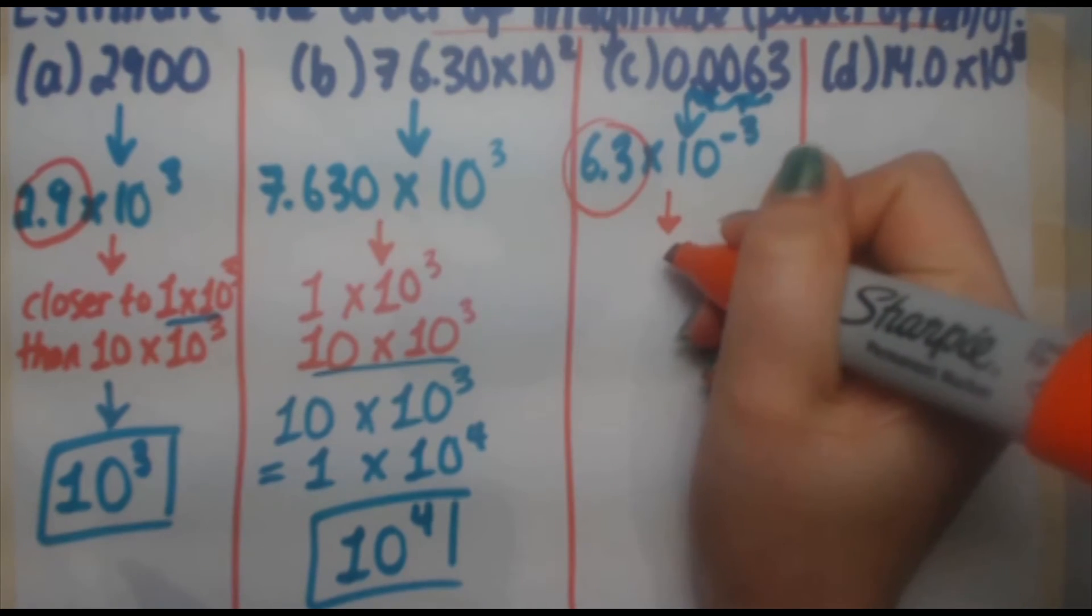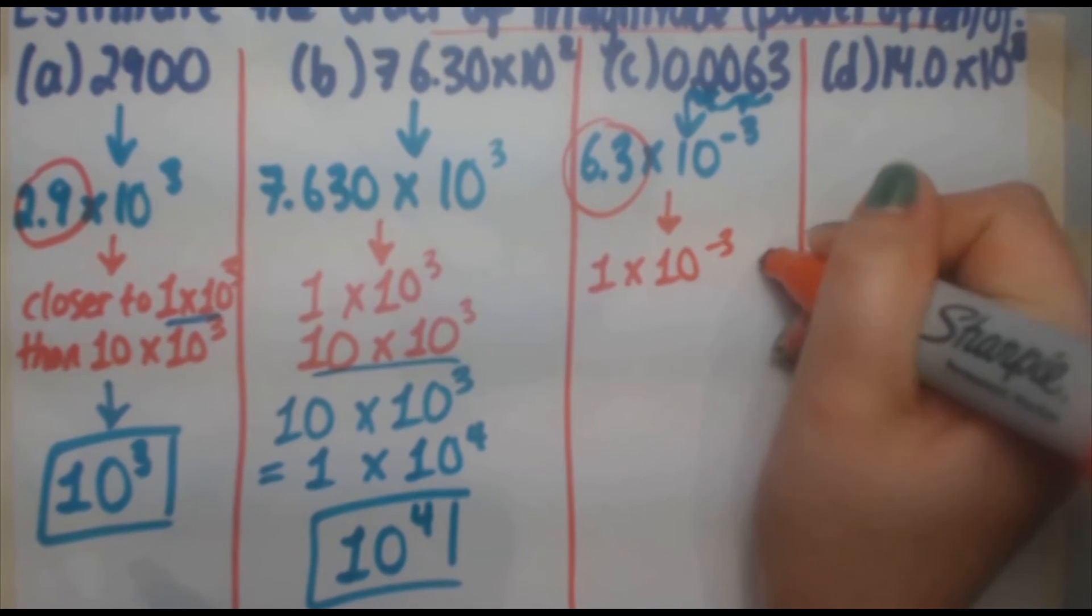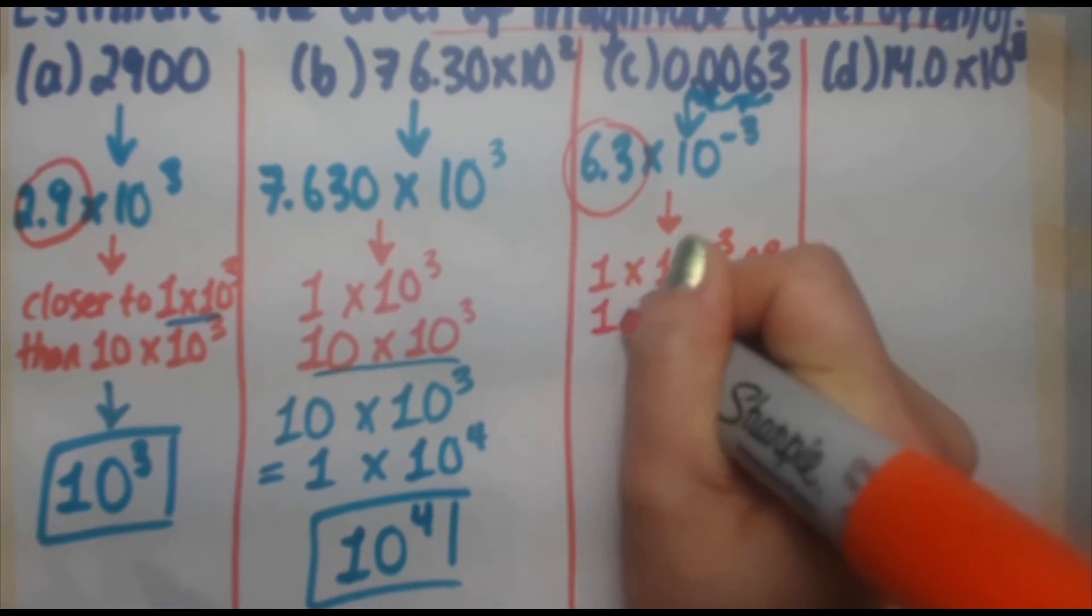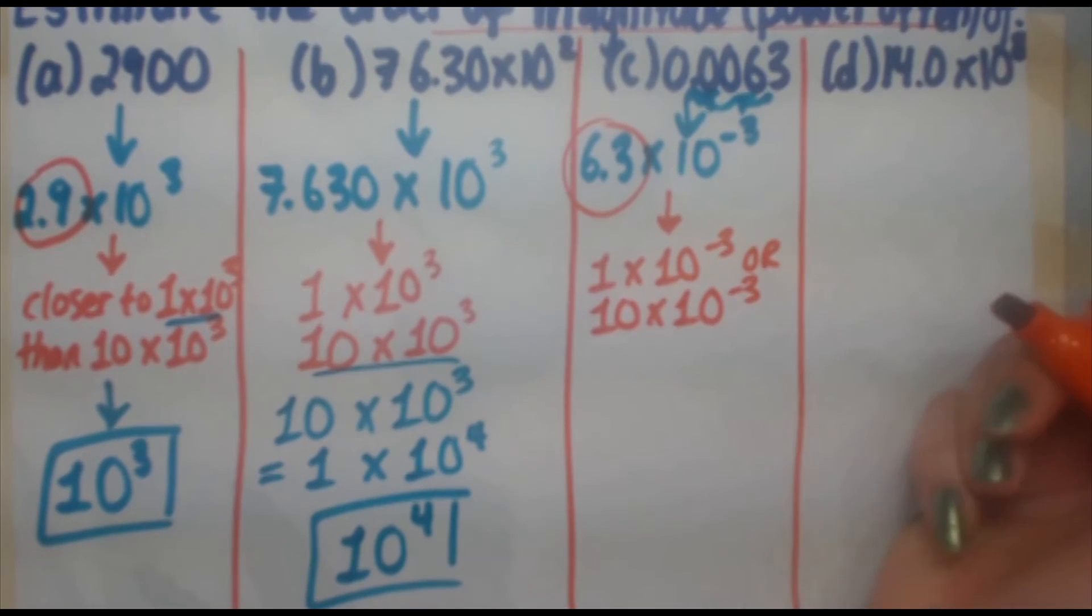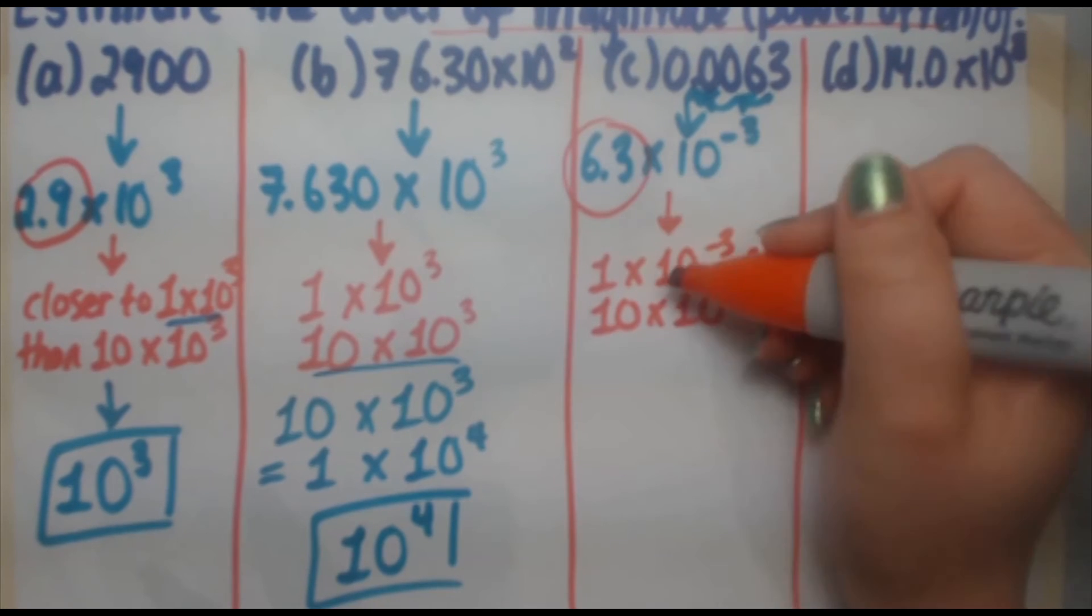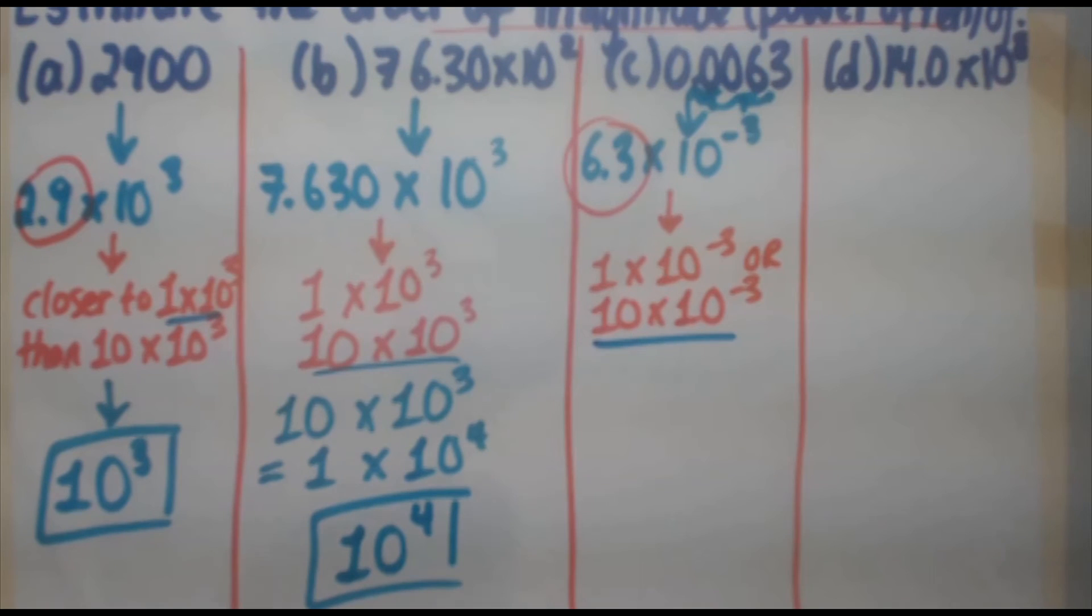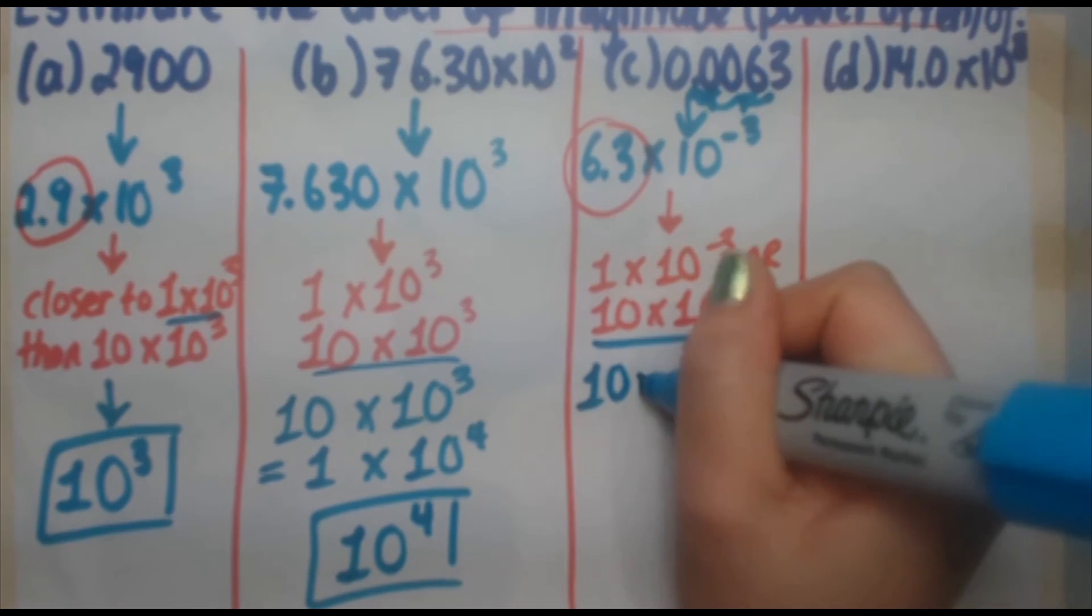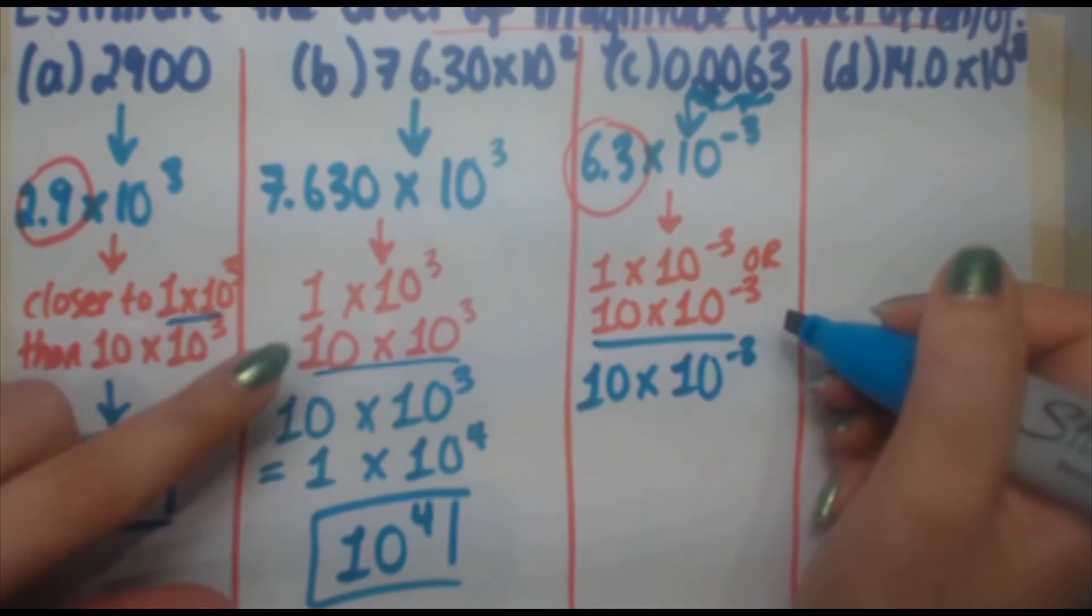So we want to see, is it closer to 1 times 10 to the minus 3 or 10 times 10 to the minus 3, right? Because those are the two edges. 6.3 is closer to 10, times 10 to the minus 3. But check this out.